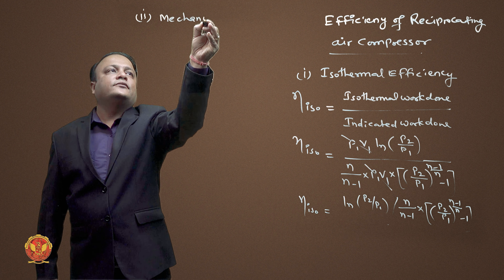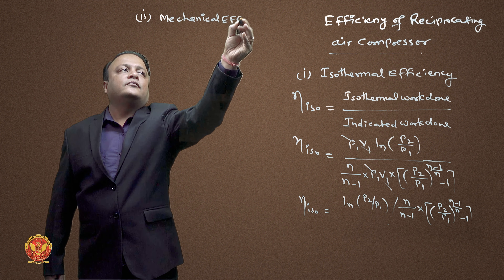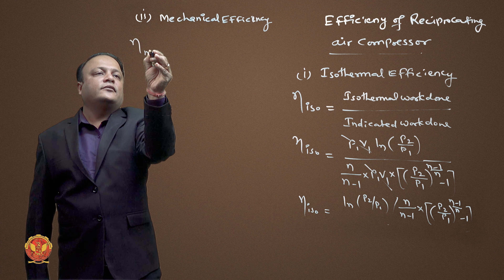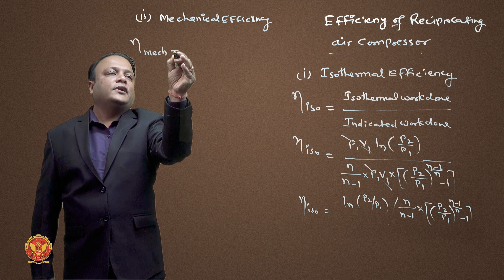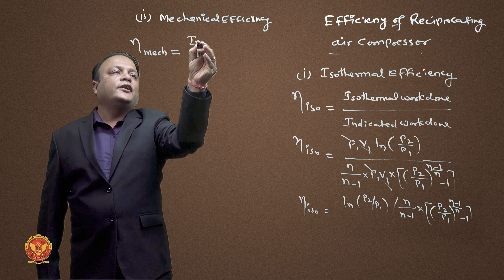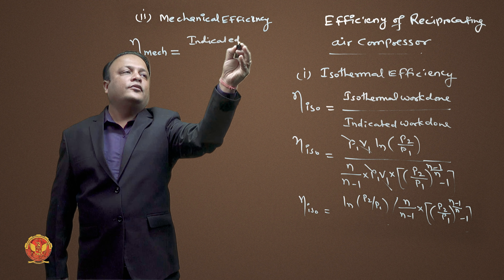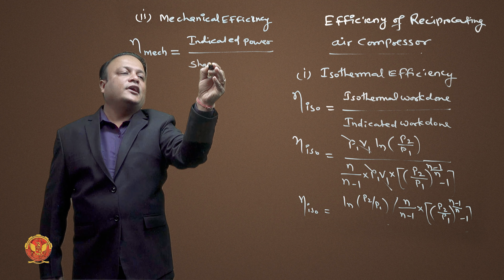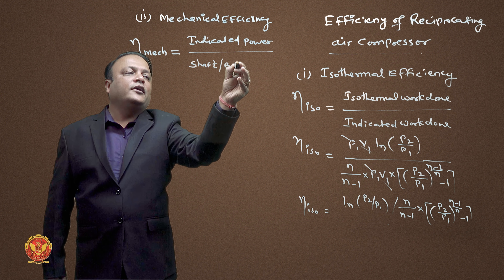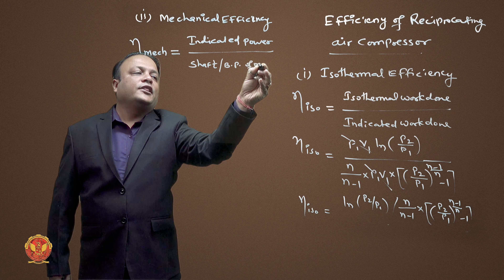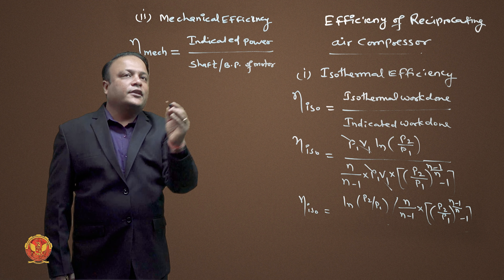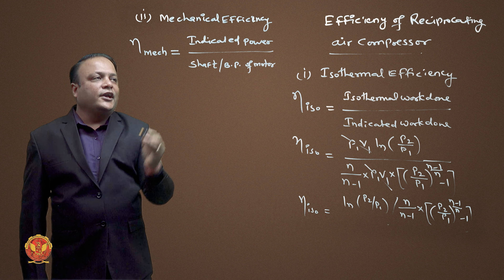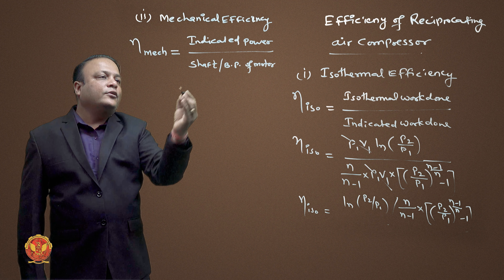For mechanical efficiency, we write eta_mech. It is defined as the ratio of indicated power to shaft power — also called brake power of the motor — indicating how much power the motor requires. The shaft power or brake power is always greater compared to the indicated power.